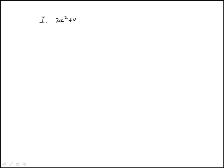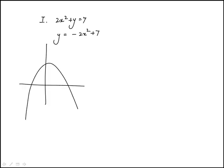In this question we have to identify the choices that define y as a function of x. Starting with the first one: 2x squared plus y equals 7. This is actually a parabola which opens downward, and it satisfies the vertical line test, meaning that a vertical line only intersects the function at one point.